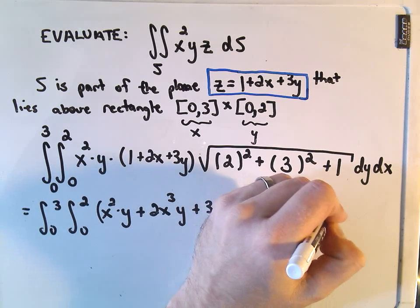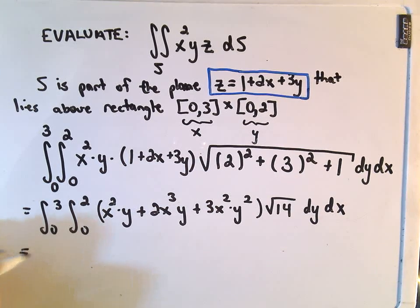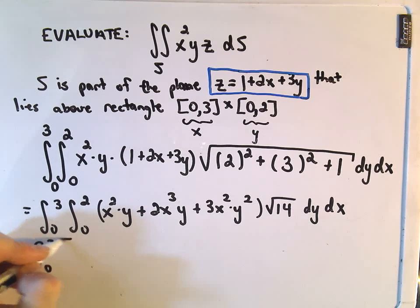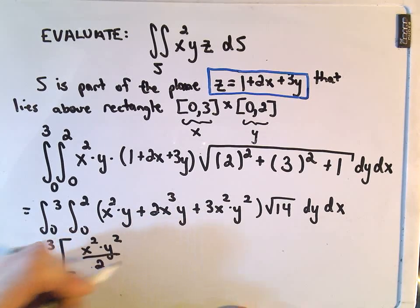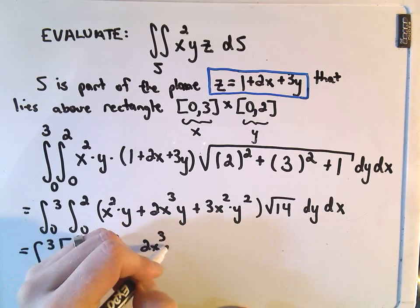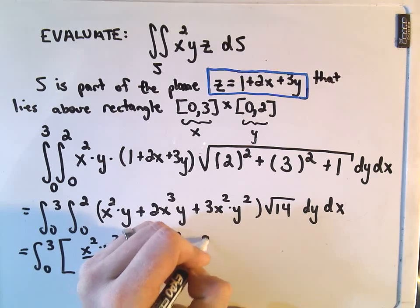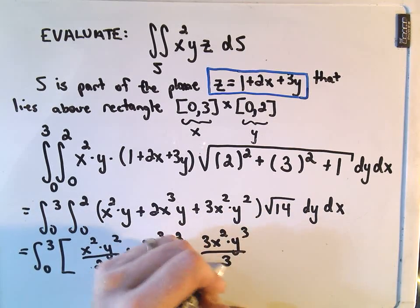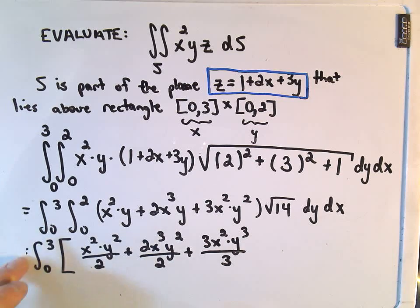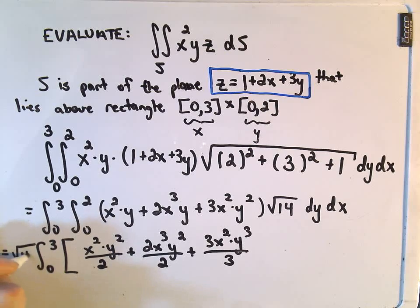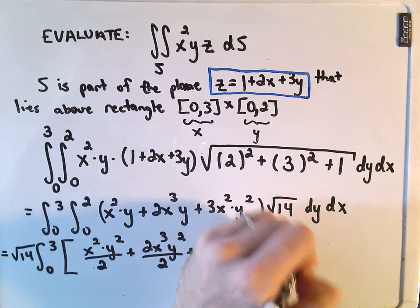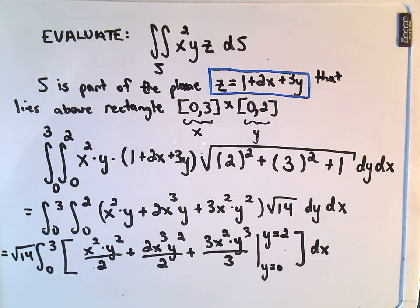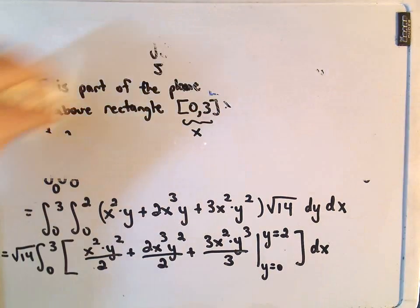We'll integrate that with respect to y, and then with respect to x. I'm going to step through this part a little faster. We've got the integral from 0 to 3. If we integrate with respect to y, we get x²(y²/2), then 2x³(y²/2), and 3x²(y³/3), all multiplied by √14. I'll pull that out front. This is evaluated from y = 0 to y = 2, and then we'll integrate with respect to x.